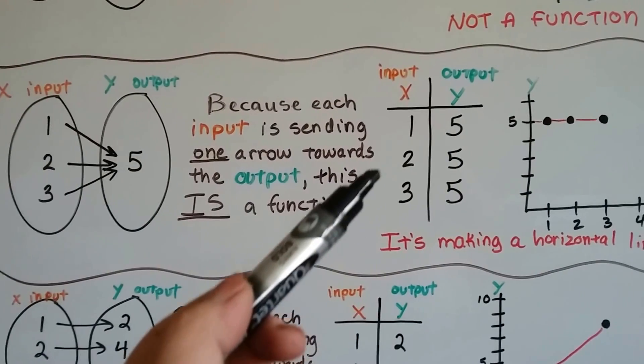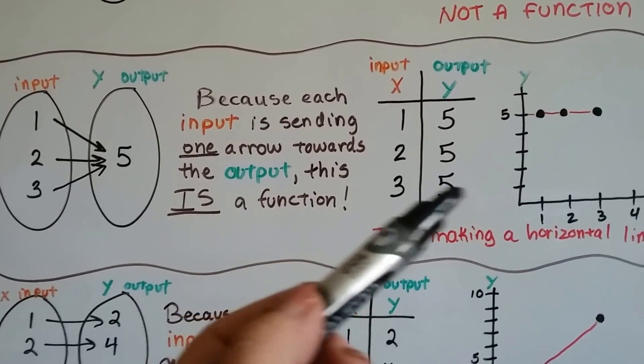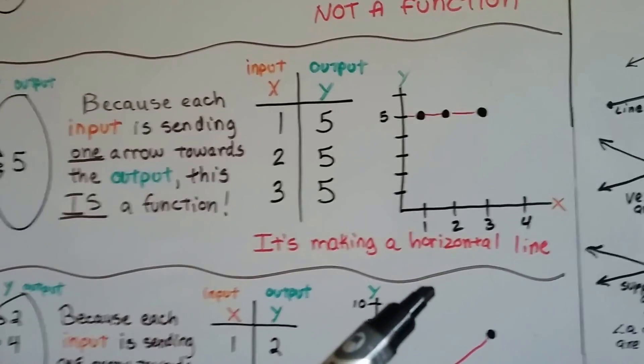And if we had it in a table, it would look like this. 1, 5, 2, 5, and 3, 5. It's making a horizontal line.